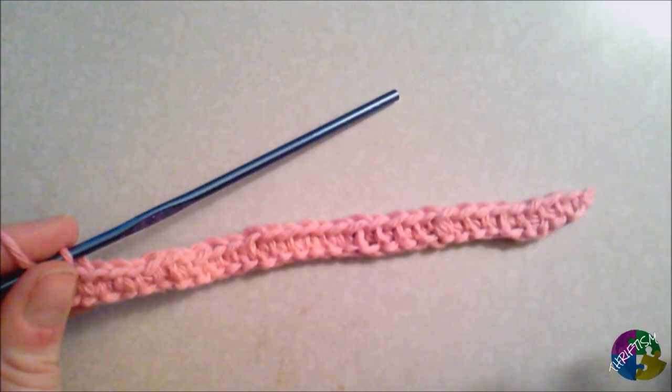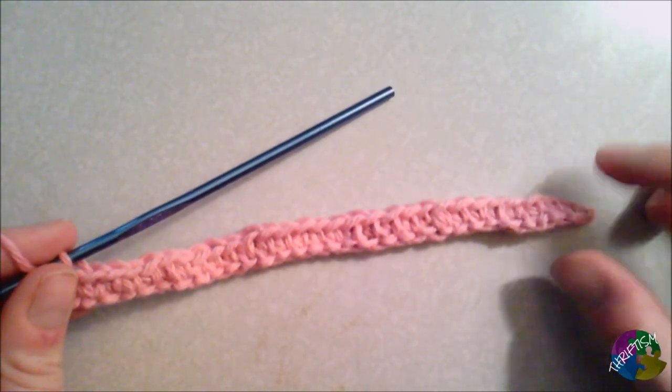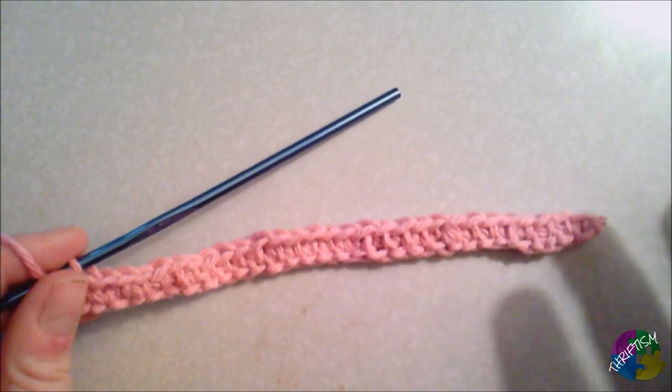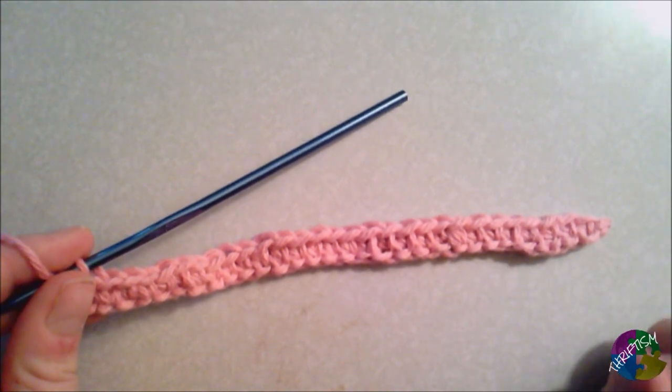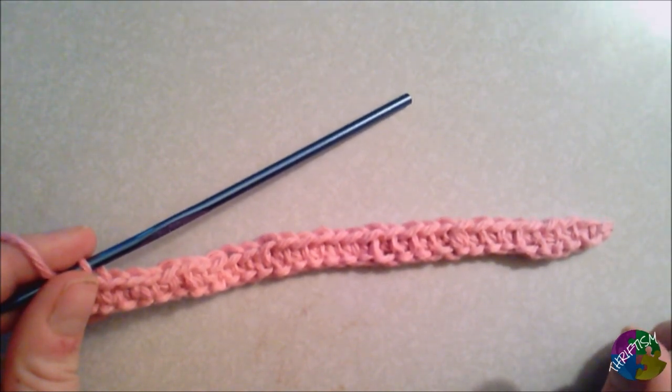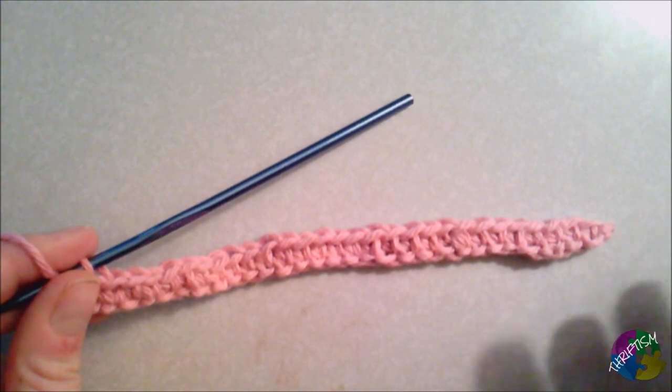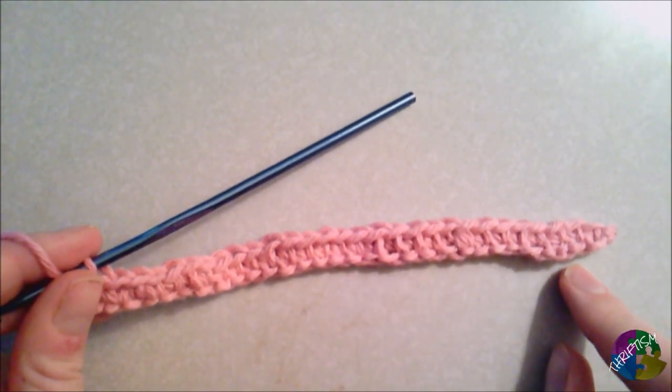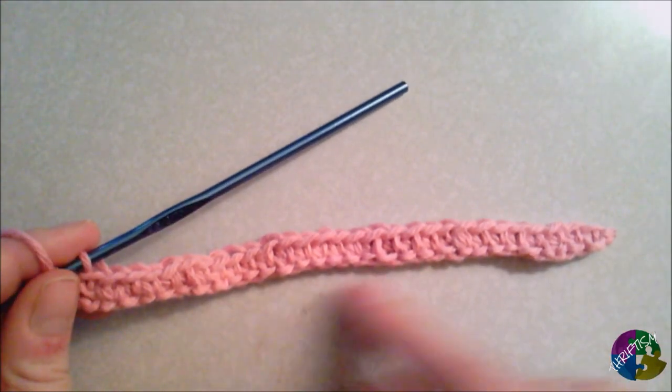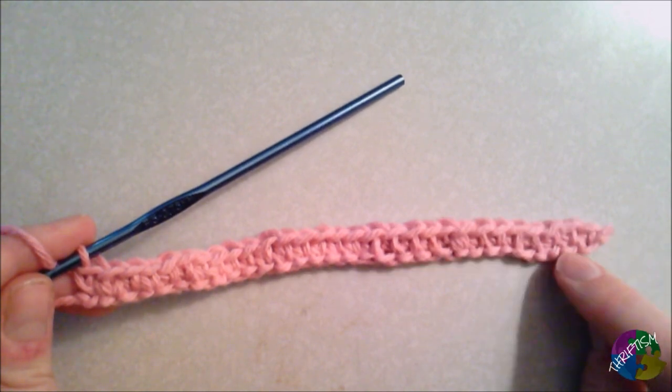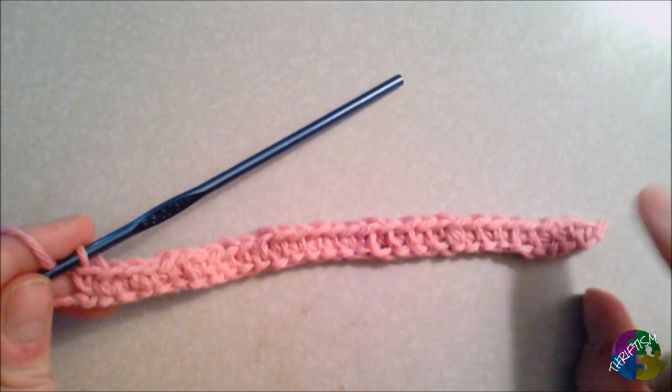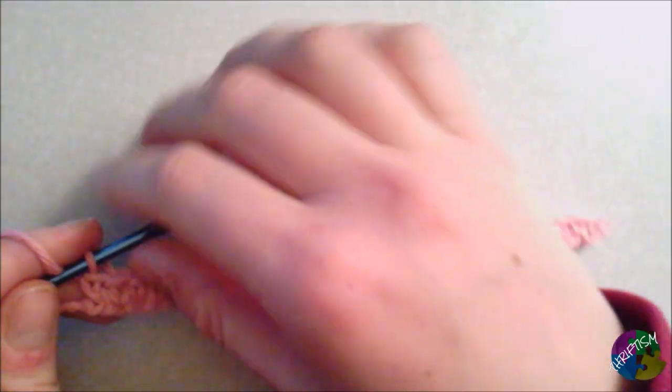So, good news is you finished the hardest row out of all of them. The first row is harder to get started, especially with this yarn that kind of unravels. But once you've done that, you should have 30 stitches on here now. And remember, we skipped the first one over here, so that's where we lost one.